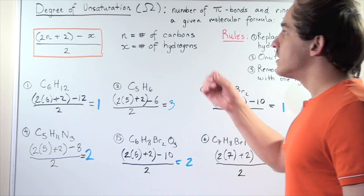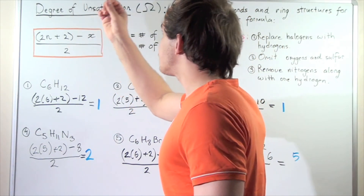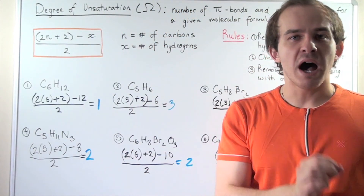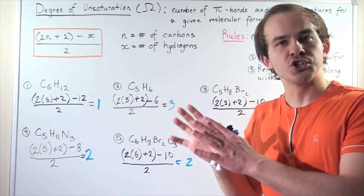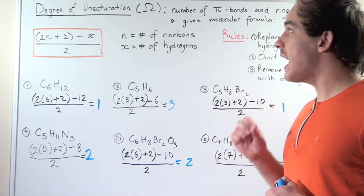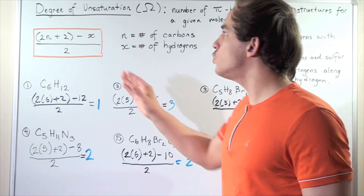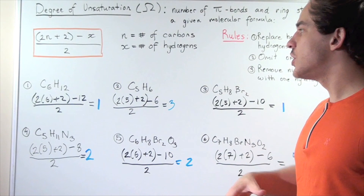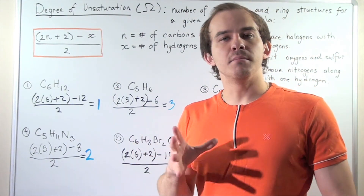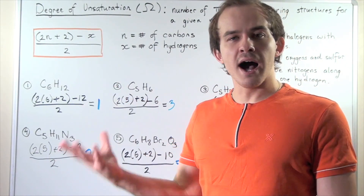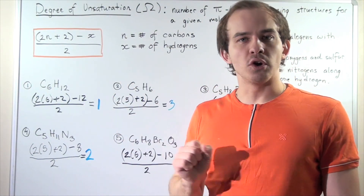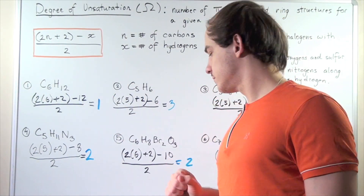Degree of unsaturation gives us the total number of pi bonds and/or ring structures in our compound, and we can use it to help figure out the molecular structure of our compound from the molecular formula.